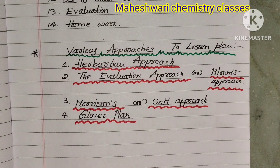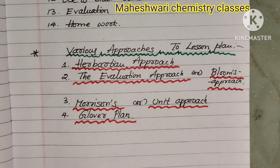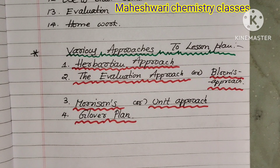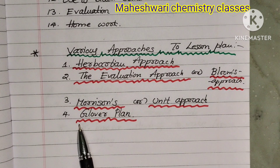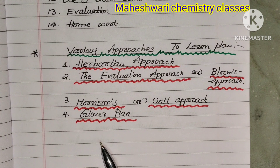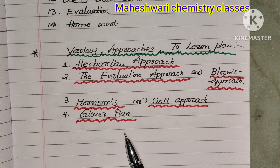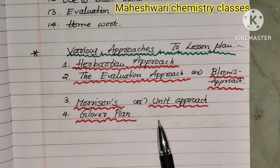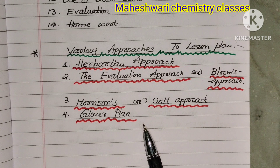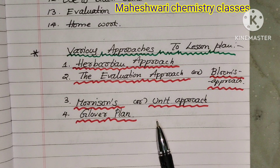We will discuss various approaches to lesson plan. We will discuss the main four types: the Herbartian approach, Evolution or Bloom's approach, and Morrison or Unit approach. This topic is important for SETS and NET exams. The main types of Pedagogy of Physical Science — it is very important to study.